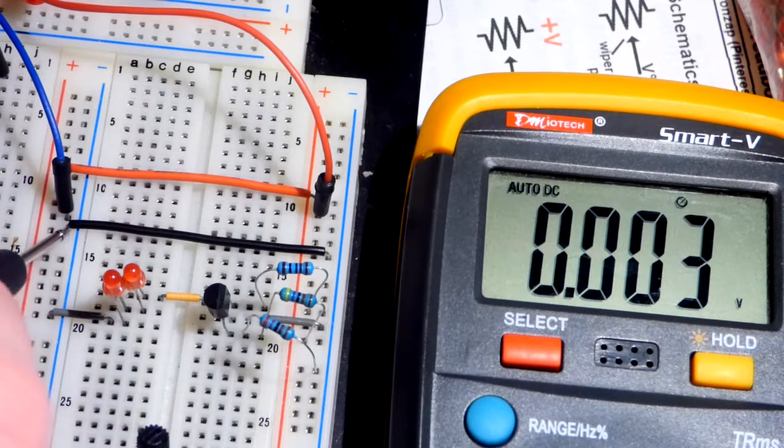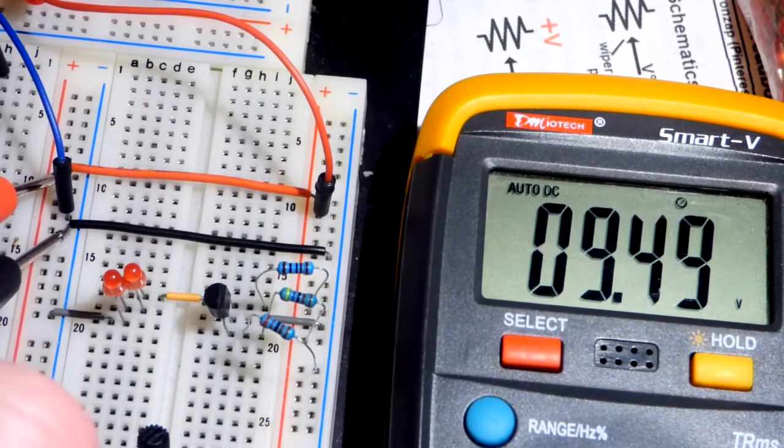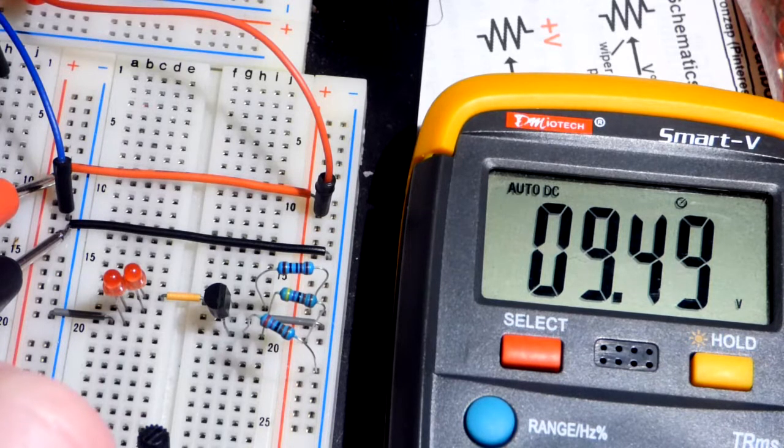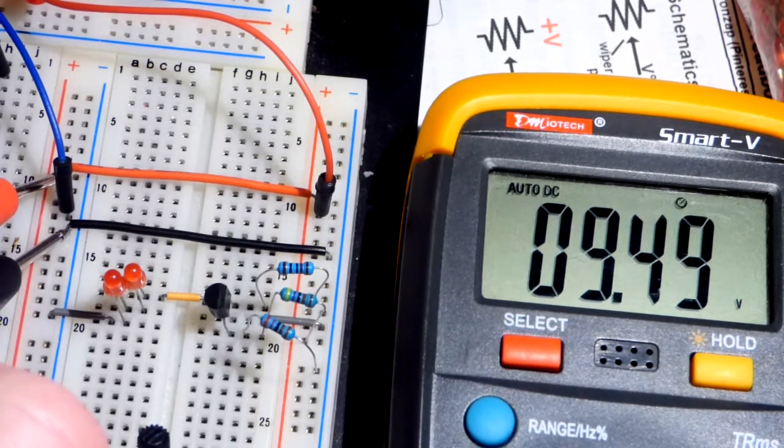First we're going to measure the voltage at the power supply rail here to show what the circuit does. So here you can see I have about 9.5 volts with my bench power supply at the rails. This is about the voltage of a 9 volt alkaline battery when it is new.